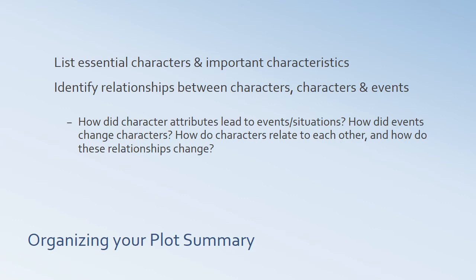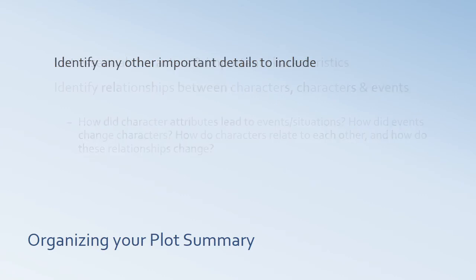Are there any figurative or symbolic meanings? Do any of the events seem to suggest or symbolize something beyond their literal meaning, beyond the literal action that's occurred? List the essential characters and their important characteristics — this will be tied to your discussion of the important events. You'll also note who the main characters are, what's important about them, how they relate to one another, how they cause certain things to happen, and how the events change them. Also include any other important details about style or setting that are essential to understanding the story.